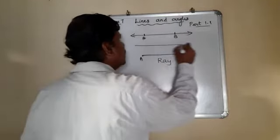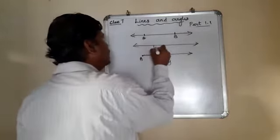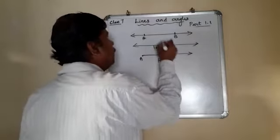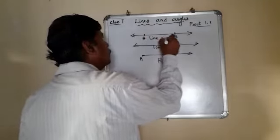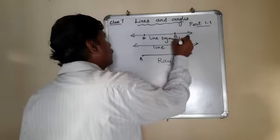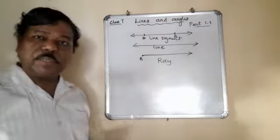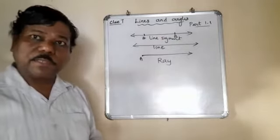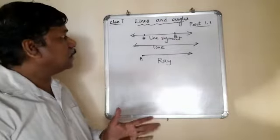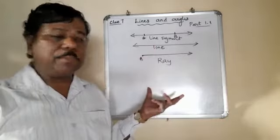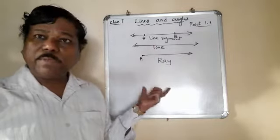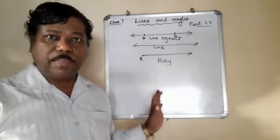Whereas this is a line segment, this is a line segment, this is a line and this is a ray. These are three different things which we can consider here. Only the line segment has got a magnitude. Line does not have any magnitude. It is having infinite length.